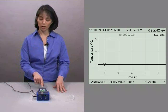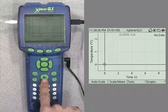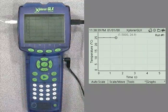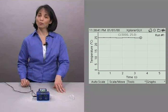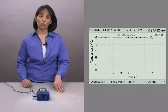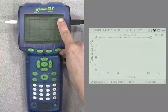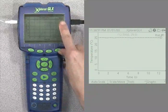So let's go ahead and push the big start stop button in the middle of the Explorer GLX. We are now collecting two data points every second. One indicator that we are collecting data is that continuously moving clock on the top bar of the Explorer GLX screen.